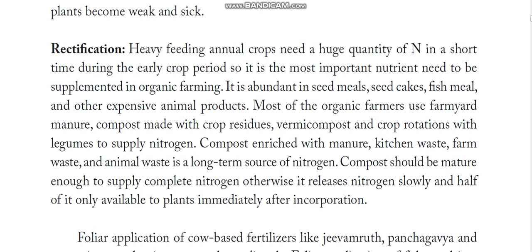For rectification, nitrogen is mostly available in seed meal, seed cakes, fish meal, and other expensive animal products. But organic growers don't prefer such expensive materials. They depend mostly on crop residues, vermicompost, crop rotations with legumes, and compost enriched with manure, kitchen waste, farm waste, and animal waste — these are cheap and reliable sources of nitrogen.